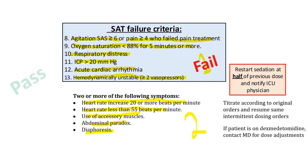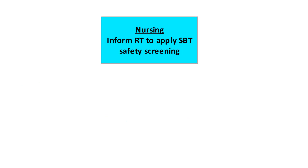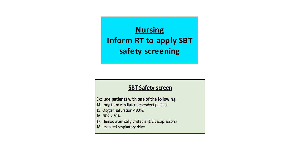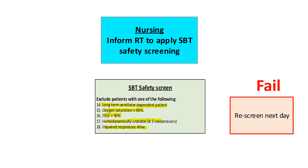If the patient hopefully passes the SAT, then the nurse will inform the respiratory therapist to apply the SPT safety screen. They will exclude patients who are long-term ventilator dependent, have desaturation, are consuming high FiO2, are hemodynamically unstable, or have impaired respiratory drive — those patients fail the SPT safety screen and will be re-scanned the next day.